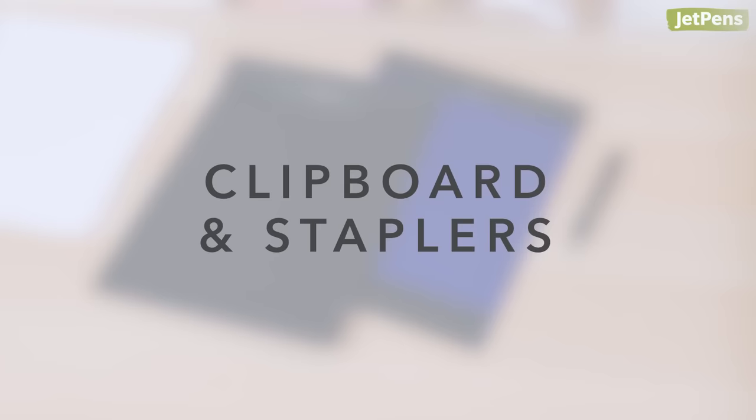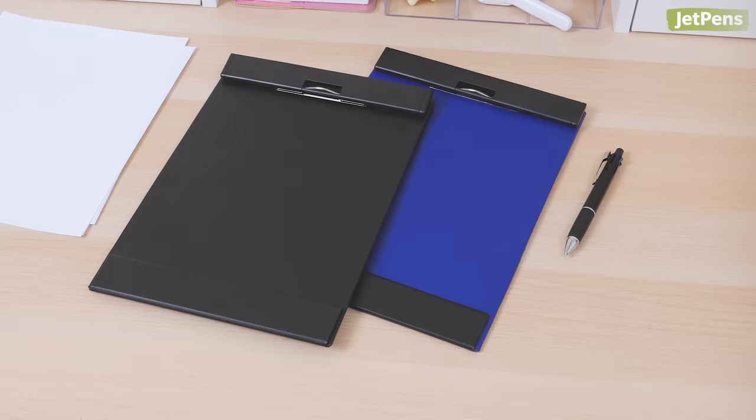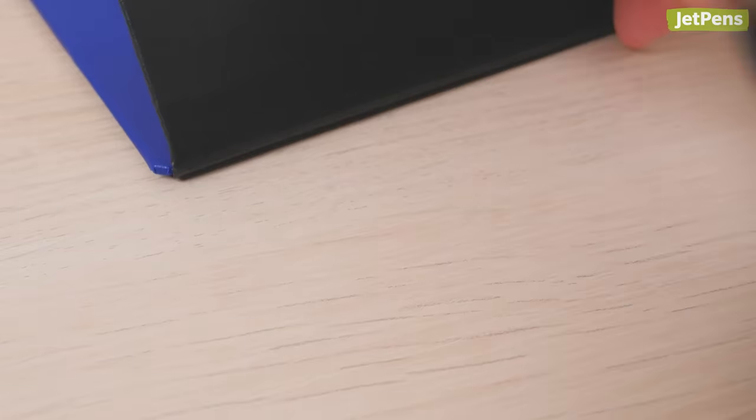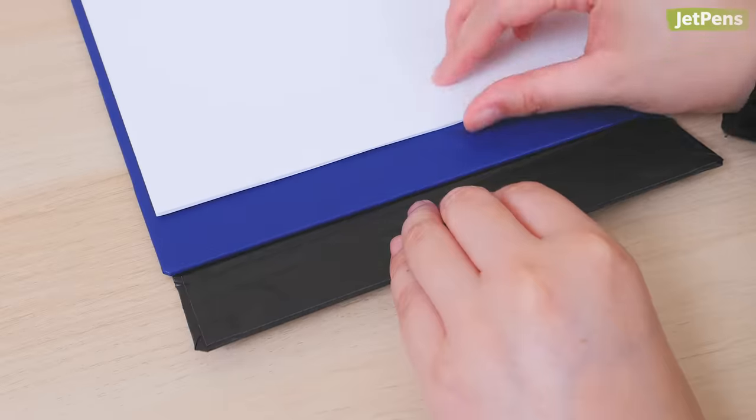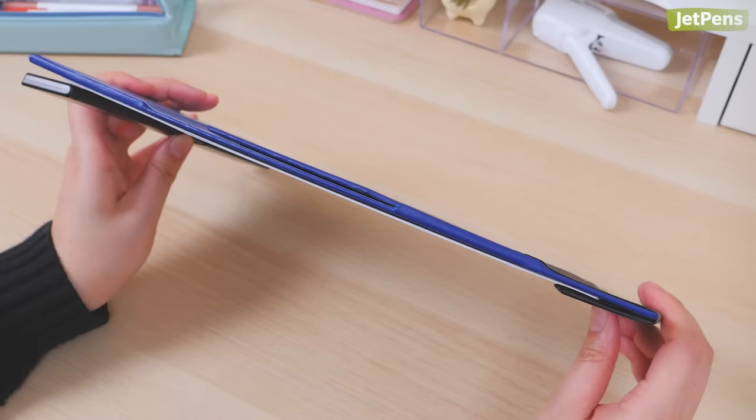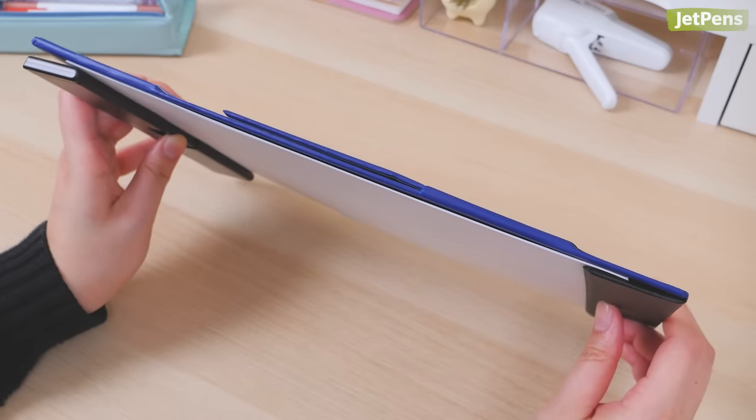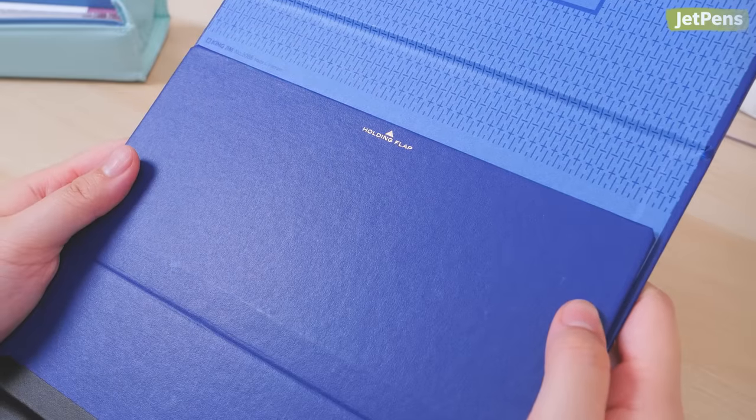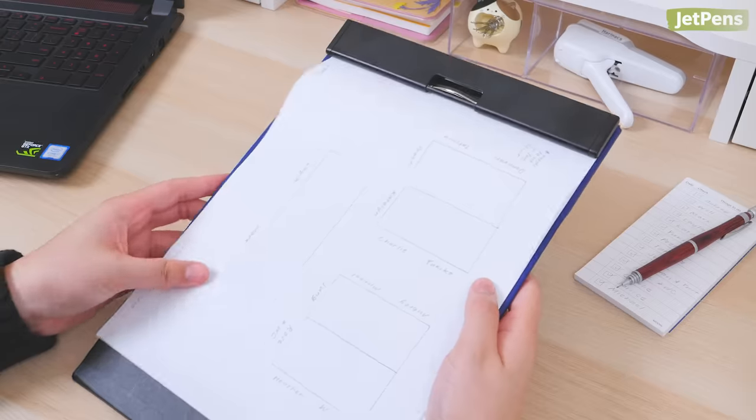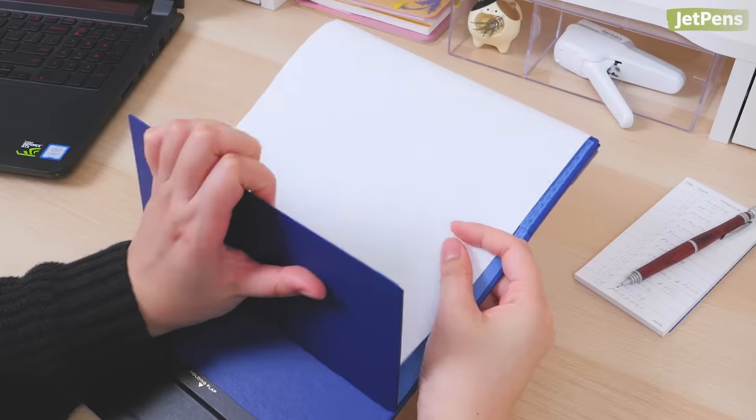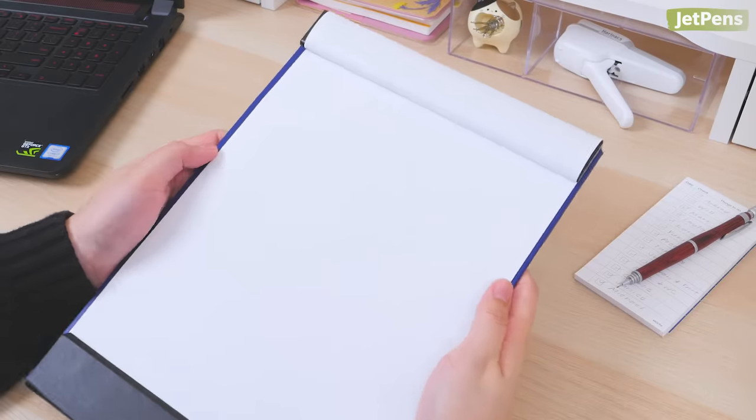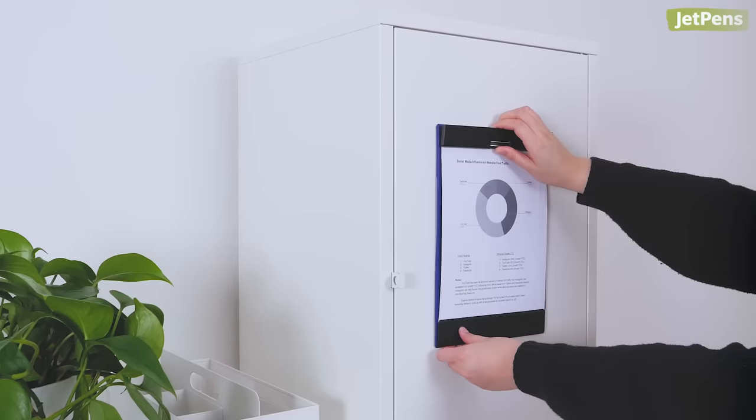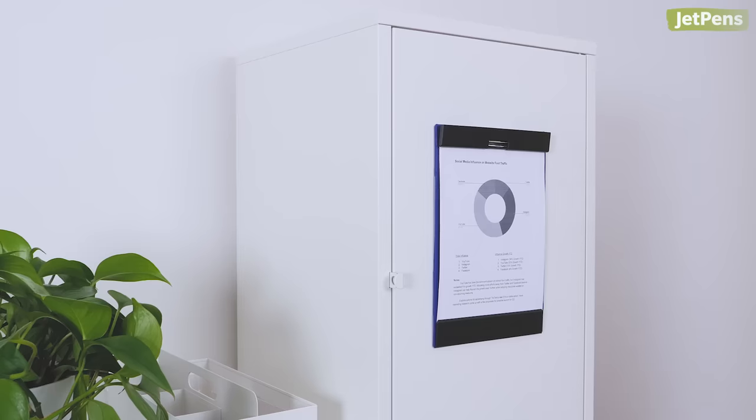Clipboard and staplers. The King Jim Mag Flap is no ordinary clipboard. A flap at the bottom uses magnets to secure your papers in place, preventing them from flying away or getting crumbled. The backside also features a large magnetic flap that holds sheets down as they're flipped over. The clipboard can stick to magnetic file cabinets or refrigerators when not in use.